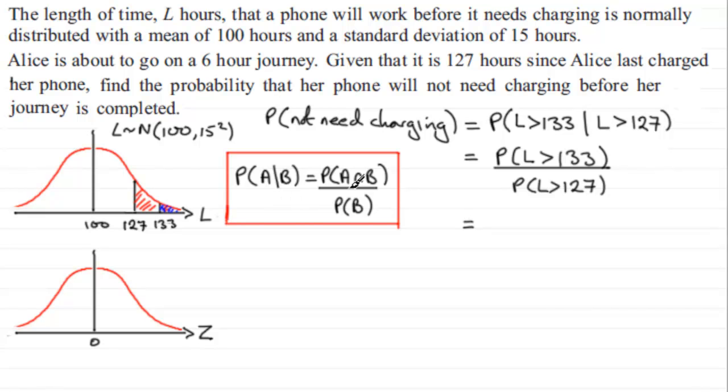Anyway, to work this out, we need to work out the probability L is greater than 133. So we need to work out the corresponding observed Z value. We can standardize it. That value of Z is going to equal 133, the observed value, minus the mean 100, all divided by the standard deviation which is 15. Work that out, and it's 2.2. 133 is 2.2 standard deviations above the mean here of 100.